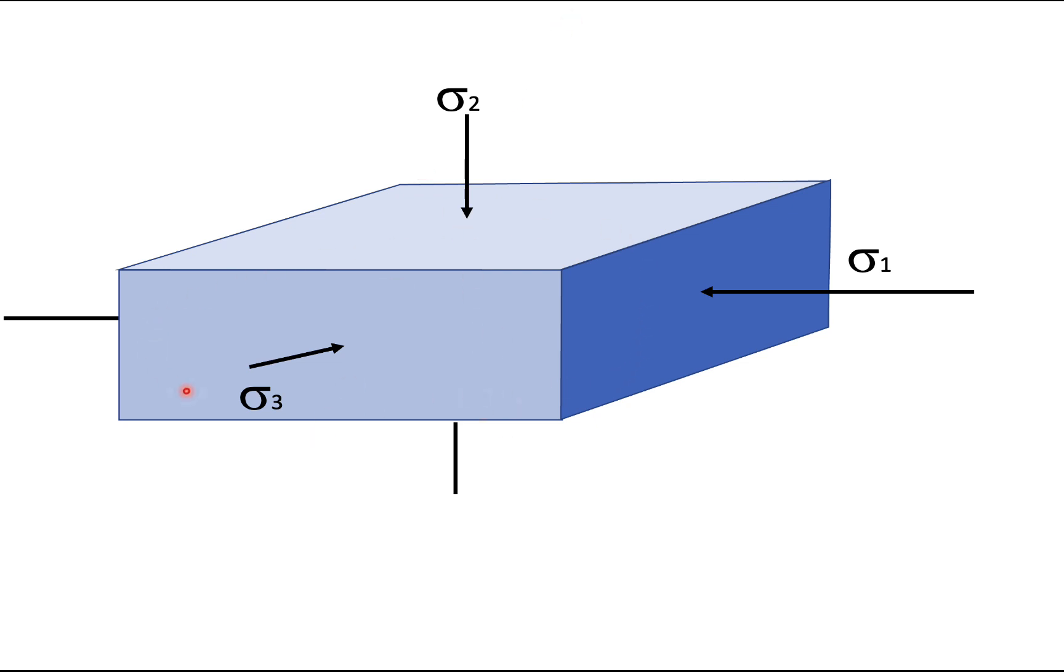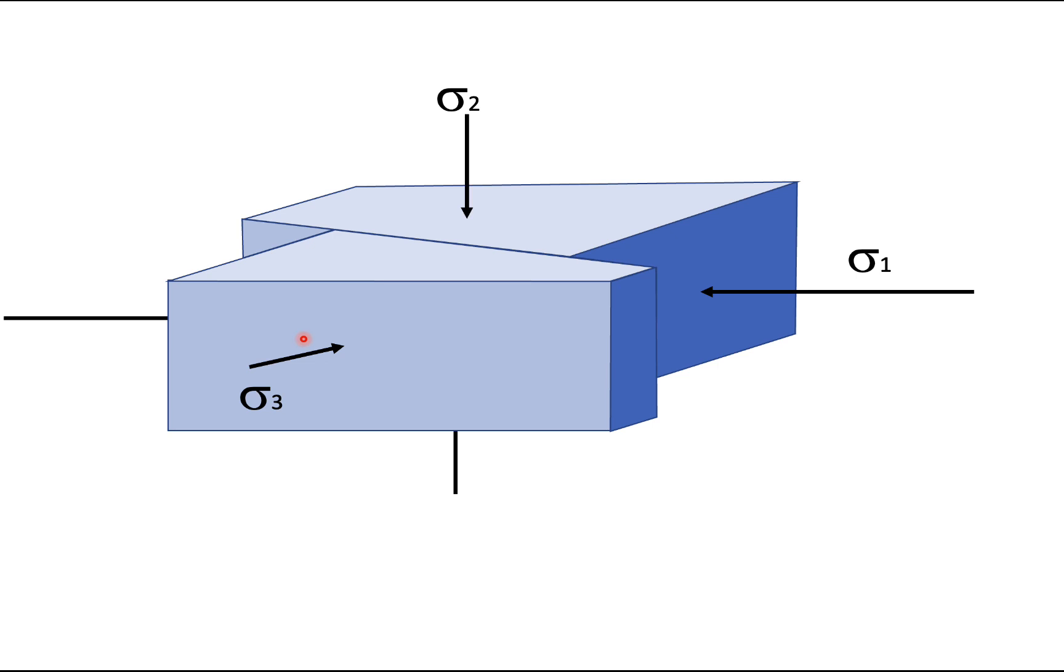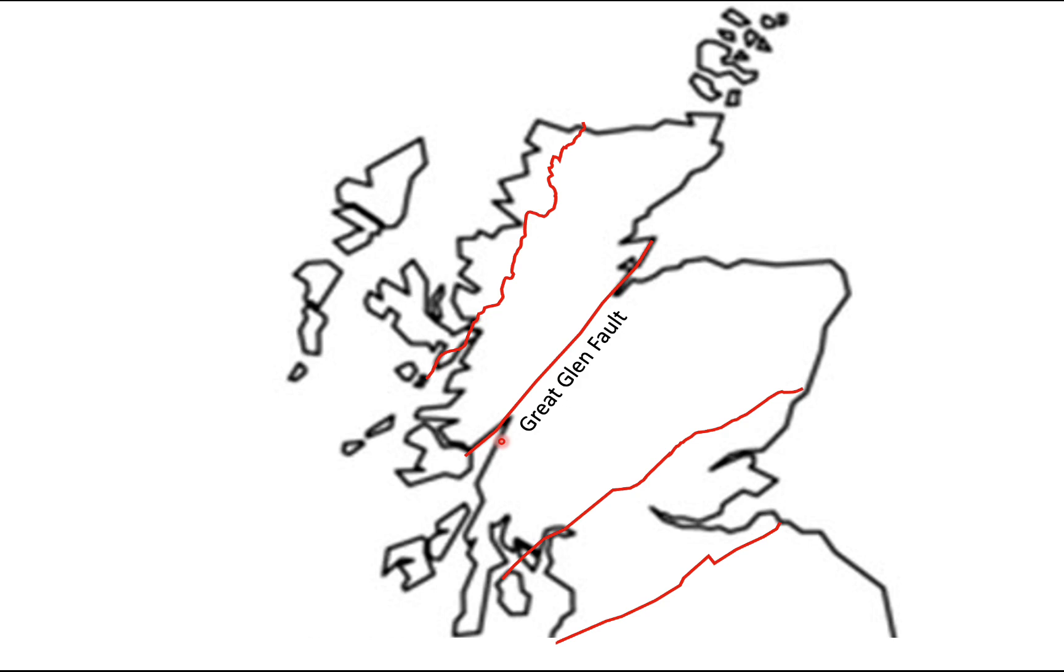So if you compress the rock like this, what's going to happen is you're going to get a fault like this. So the fault will be pretty much vertical and the orientation of the fault is controlled by this horizontal sigma 1 direction. And the Great Glen fault is a good example of that.